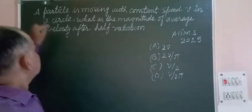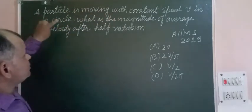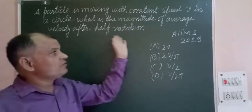So students, the question is: a particle is moving with constant speed V in a circle. What is the magnitude of average velocity after half rotation?